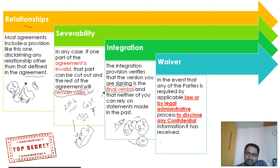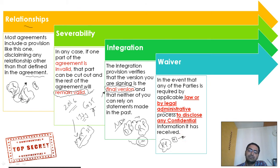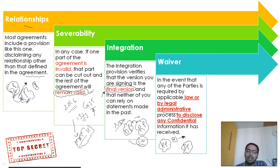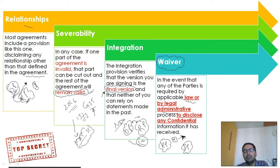The next clause is waiver. This clause protects both parties, especially the receiving party. Suppose by law or legal administration, the receiving party is instructed to disclose some confidential information for an inspection or legal proceeding. In that case, the receiving party must immediately inform the disclosing party so they can protect themselves, and the receiving party must ensure they disclose the minimum amount of confidential information. This clause exists because without it, disclosing under legal compulsion could constitute a breach of the NDA.